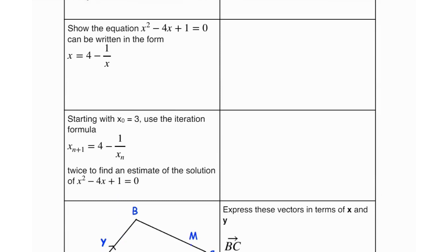Show that the equation x squared minus 4x plus 1 equals 0 can be written in the form x equals 4 minus 1 over x. So what we're going to do is I'm going to first take 4x to the other side, as well as positive 1, so it's going to be 4x minus 1.